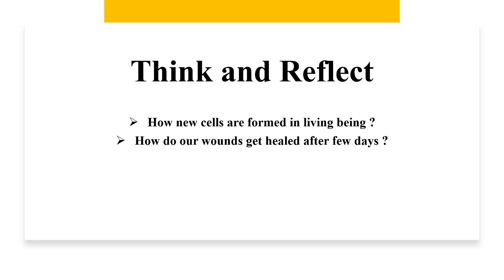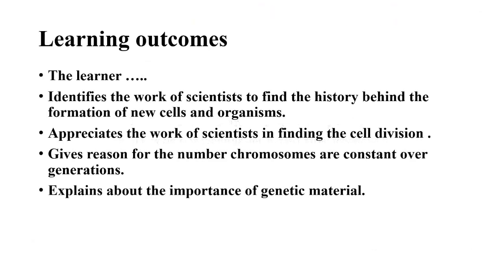This is how cell division replaces the dead ones and it helps in the formation of reproductive cells. Let us see who worked in this area, in the field of cell division, who discovered cell division first. From this lesson, the learner will identify the work of scientists to find the history behind the formation of new cells and organisms, appreciate the work of scientists in finding cell division which explains why the number of chromosomes is constant over generations, and explain the importance of genetic material.